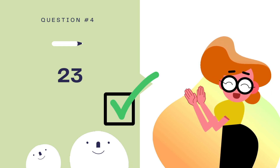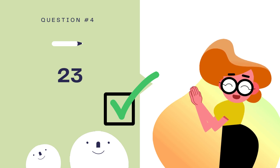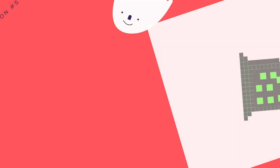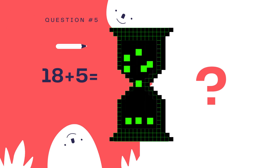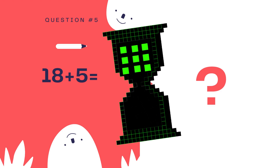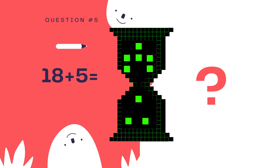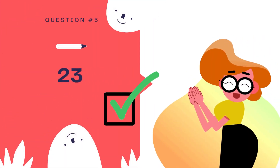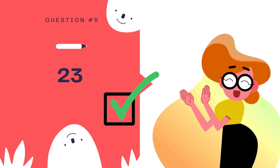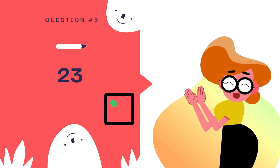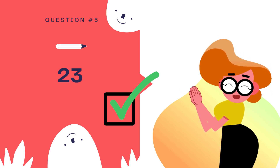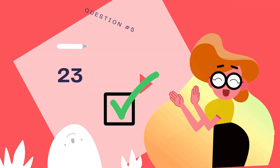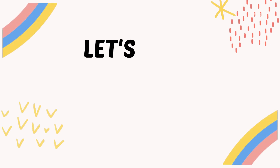Now, are you ready for the last question? Let's look at the last question: 18 plus 5. Now let's look at the answer. The answer is 23. Well done girls if you get all the answers correct. Now let's move to our lesson for today.